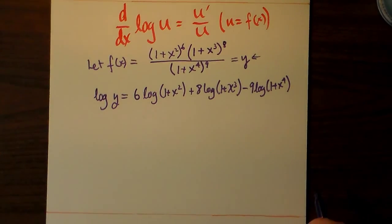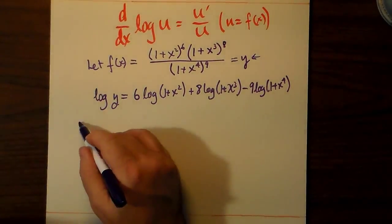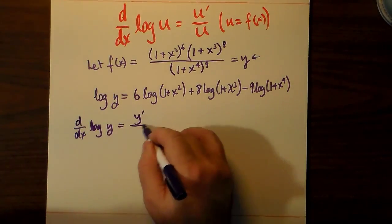So 6 times log of 1 plus x squared plus 8 times log of 1 plus x cubed minus 9 log 1 plus x to the 4th. I'll make the log of y, and then when we take the derivative of both sides, well,